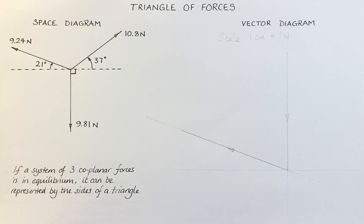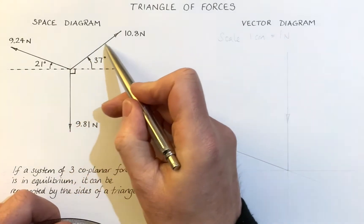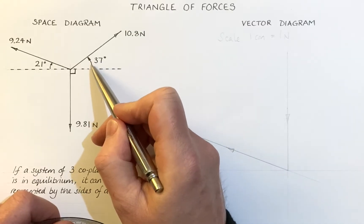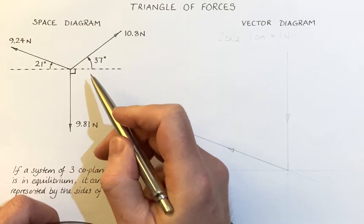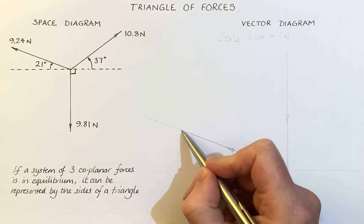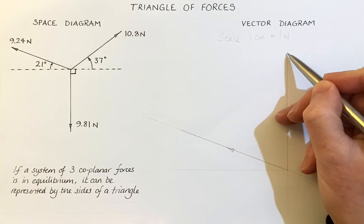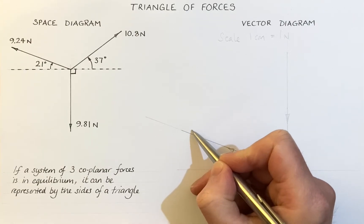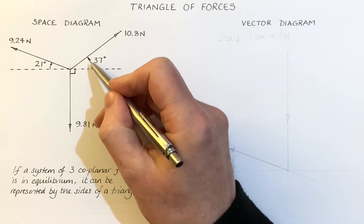Now, the next vector is this one here. And that's 37 degrees up from the horizontal. Now, I want to draw it from the end of this vector here, back up to the top of the triangle there. But that angle there is not going to be 37 degrees. It's actually going to be a little bit more.